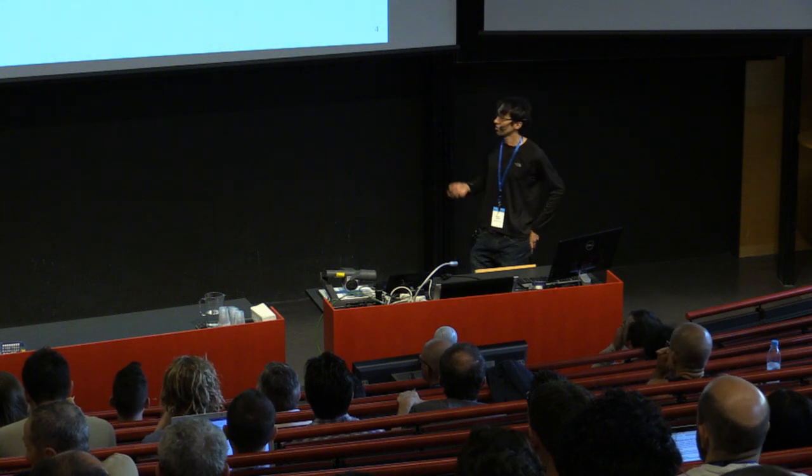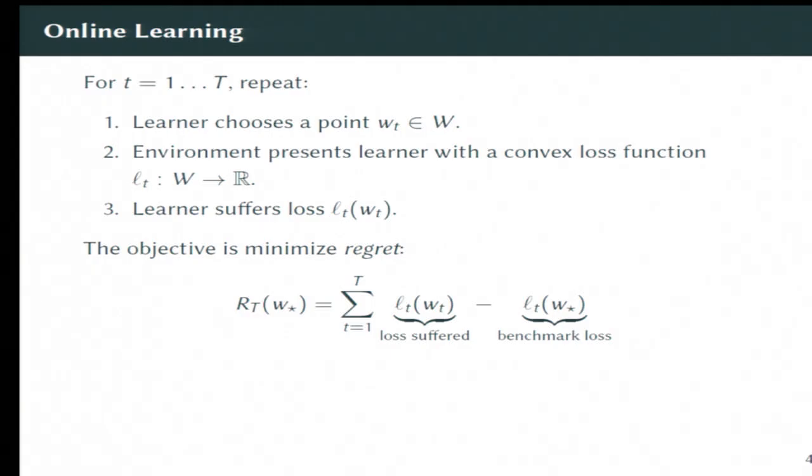The objective is to minimize this quantity called regret, which we define to be a function of a benchmark point W star. And it's the total loss suffered by the learner minus the loss suffered at the benchmark point. Now, because everything in our setup is convex, we can actually upper bound the regret by this linearized regret where we take G_T to be a subgradient of each loss function at the point W_T.